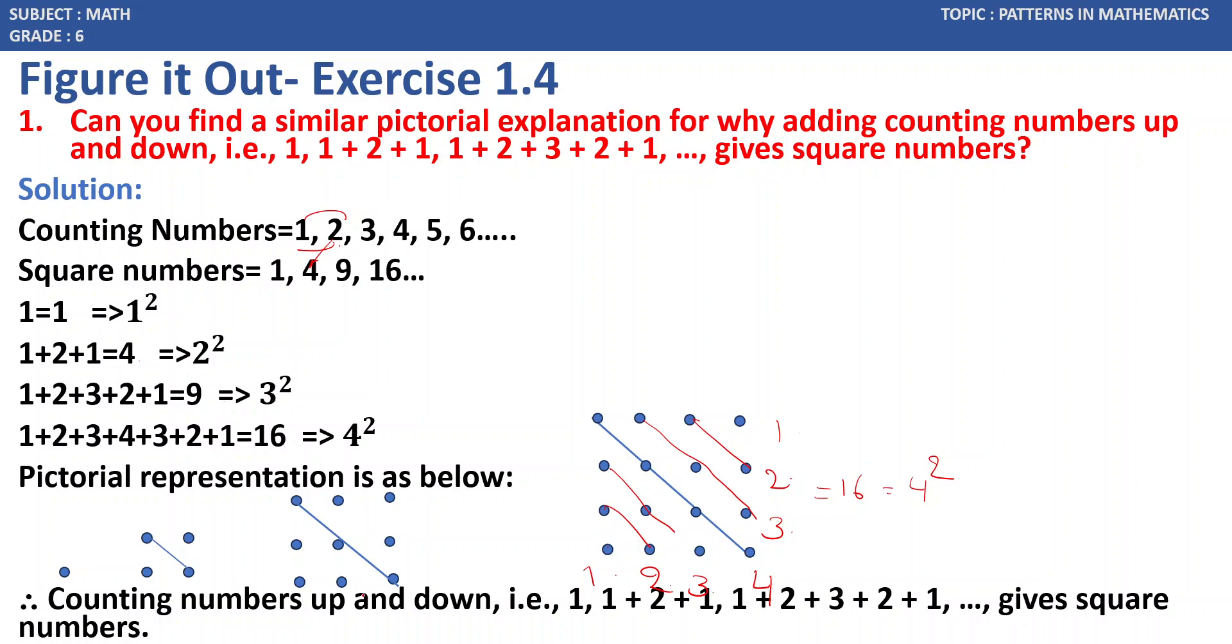Thus, counting numbers up and down—that is 1, 1 plus 2 plus 1, 1 plus 2 plus 3 plus 2 plus 1—gives square numbers.